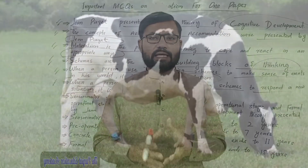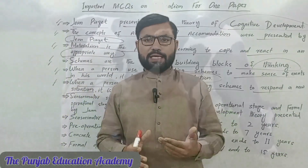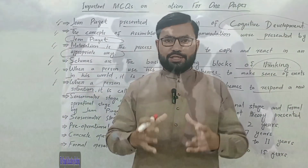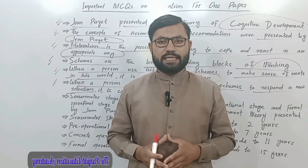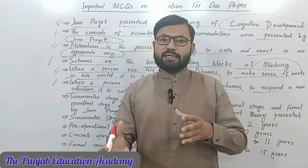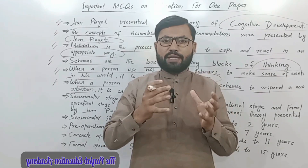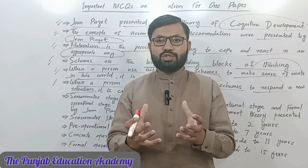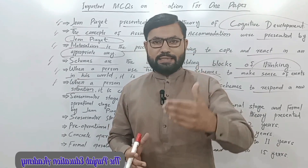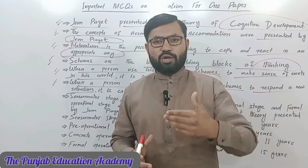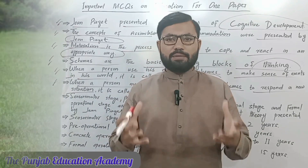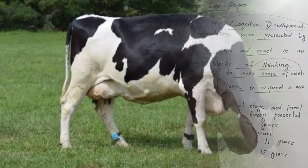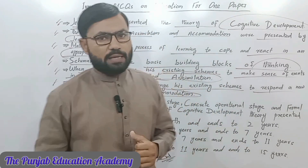अचानक से उस बच्चे के सामने एक cow आ जाती है। बच्चा देखता है कि इसकी four legs हैं, tail भी है, horns भी हैं, और दो ears भी हैं — तो यह totally एक different object है। तो बच्चा इसके हवाले से एक नया schema बनाएगा, अपने mind में एक नई information create करेगा — कि इस तरह four legs, tail, horns वाला एक animal है — और एक नया schema develop करेगा।